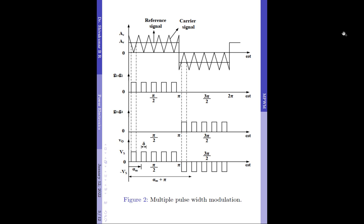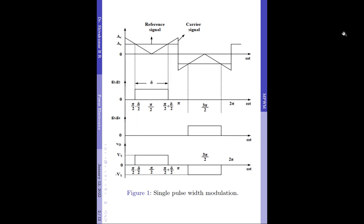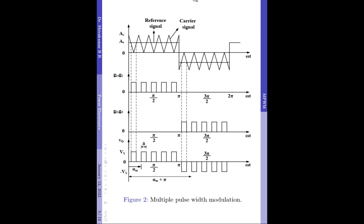I will also leave the links of both these videos in the description below. What should be noted is that in both the Single Pulse Width Modulation as well as the Multiple Pulse Width Modulation Technique, the type of the reference signal used is rectangular in nature. This resulted in constant width pulses for driving the transistors.